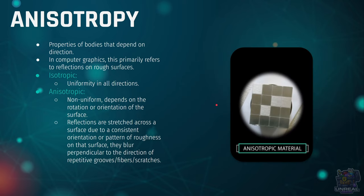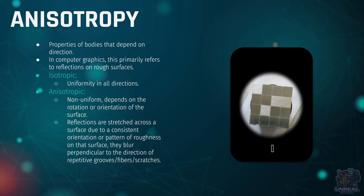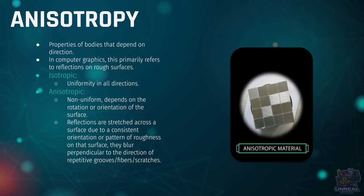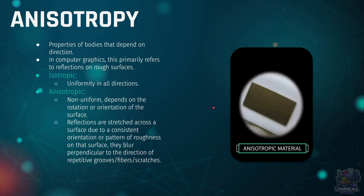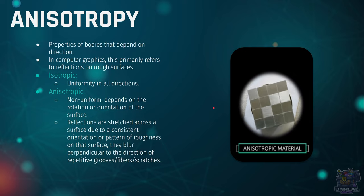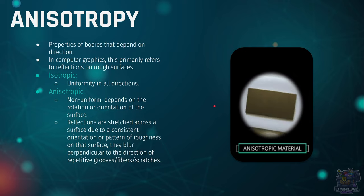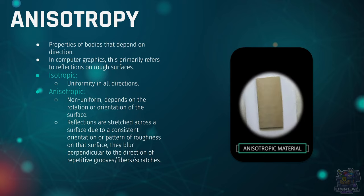With anisotropic surfaces, we are going to see that they are non-uniform. That means they depend on the camera view or the rotation of the object, so the specular highlights are going to change depending on direction. The reflections and specular highlights are going to be stretched across the surface due to the micro-grooves, fibers, or scratches in the material. They blur the specular highlight perpendicularly to the direction of the grooves.